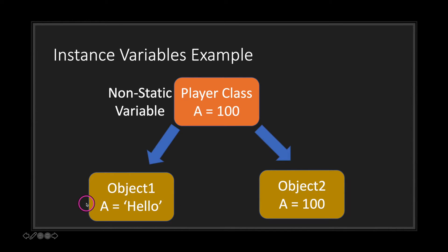When we change the value of object one — in this case assigning a string value to 'a' — notice how we're not changing the value in object two. This is because each object has a separate copy of the variables they receive from the instantiated class, in this case our player class. All member variables are isolated to their own object.